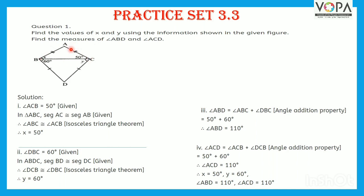In triangle ABC, segment AC is congruent to segment AB, as given. Therefore, the angles opposite to congruent sides are congruent. Therefore, angle ABC is congruent to angle ACB as per the isosceles triangle theorem. Therefore, X is equal to 50 degrees.